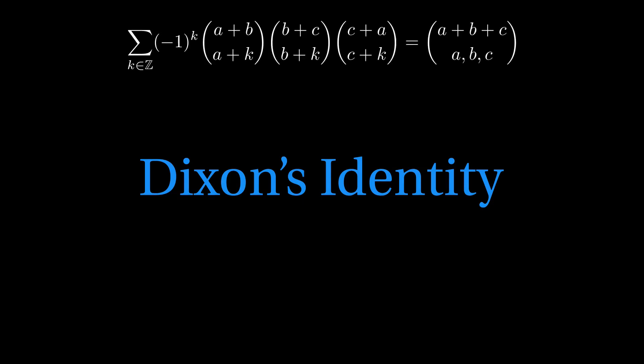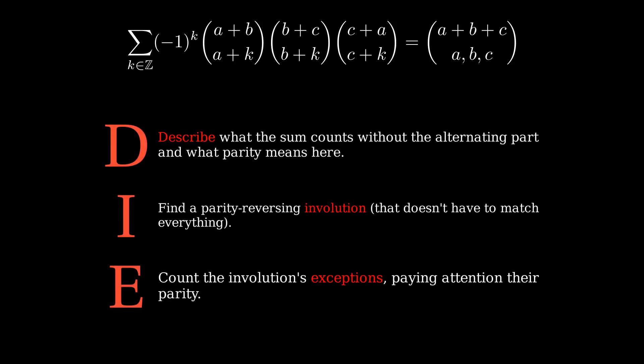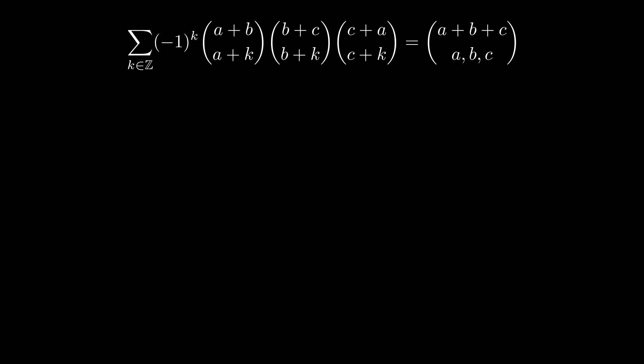The left-hand side looks a bit intimidating, but it's an alternating sum, so we know to look for an involution with exceptions, and we can already see that the exceptions are exactly the trinomial coefficients. Along with the discussion of the three planes we just finished talking about, we now have all the clues we need to set this up in a typical DIE style. Let's examine the left-hand side closely to describe it without paying attention to the alternating part yet.